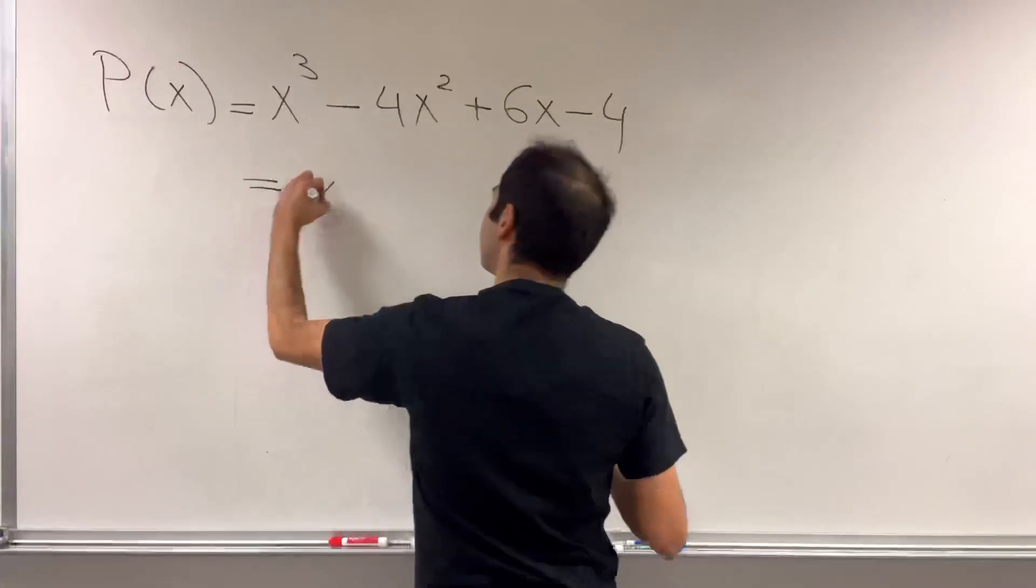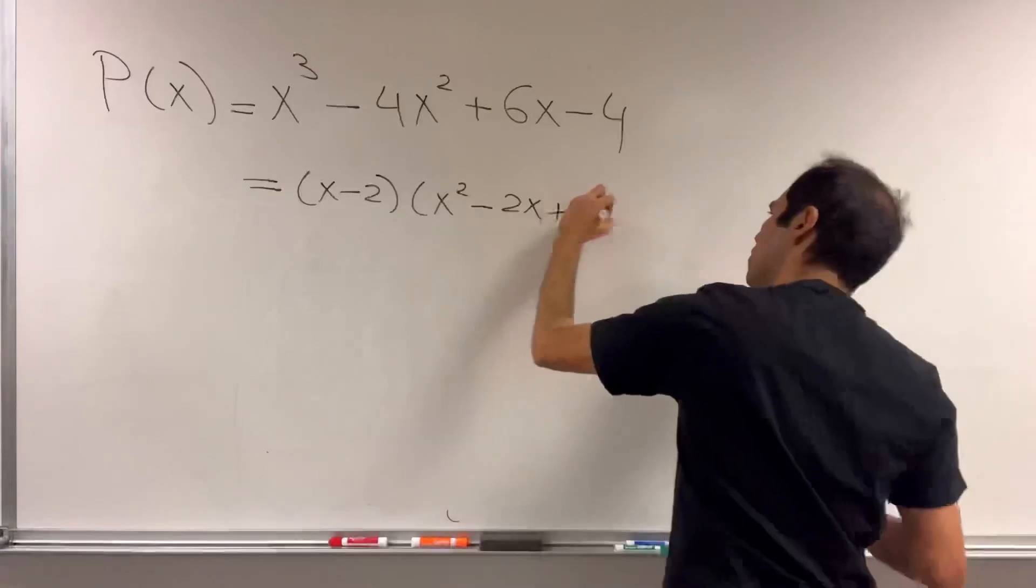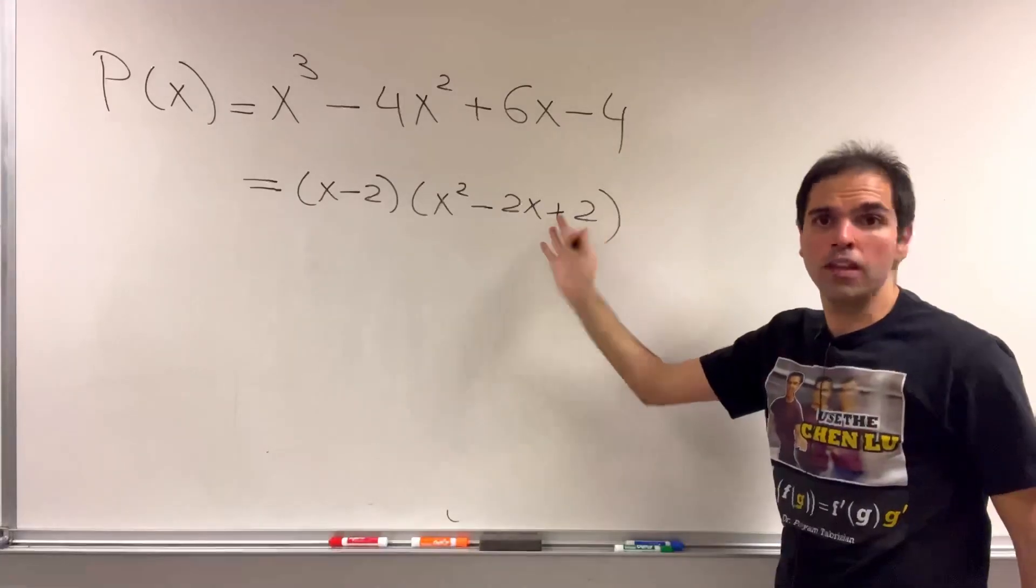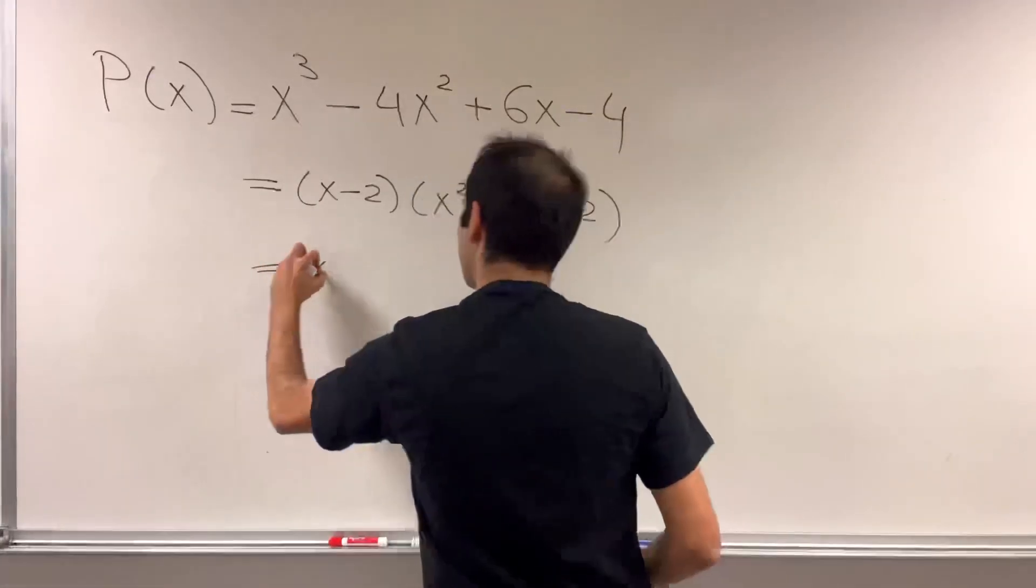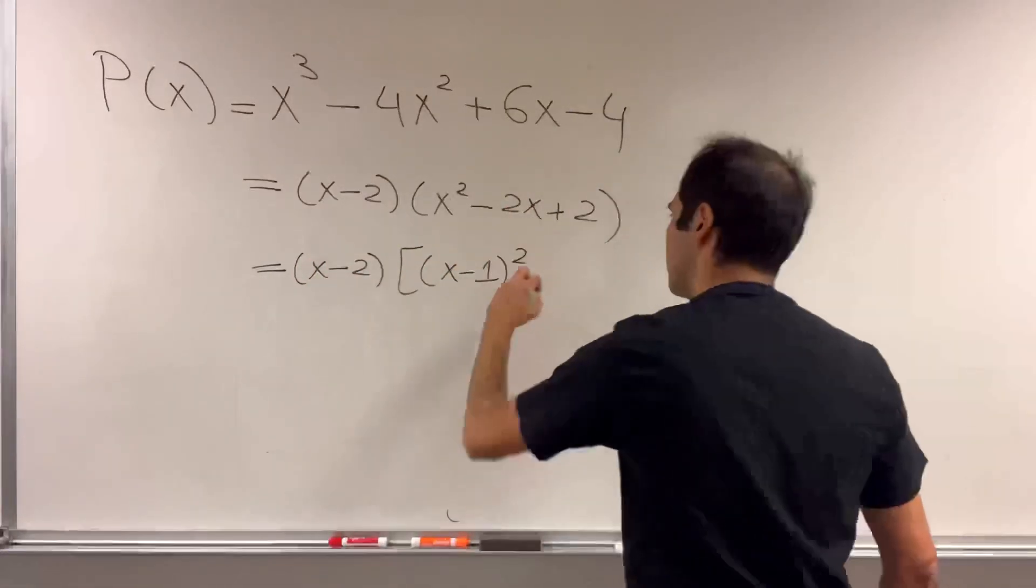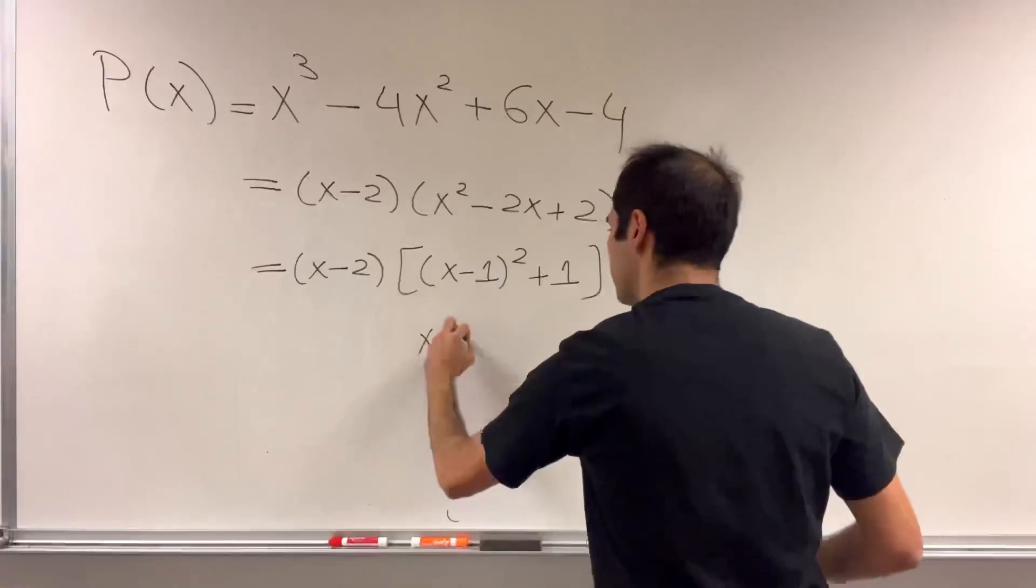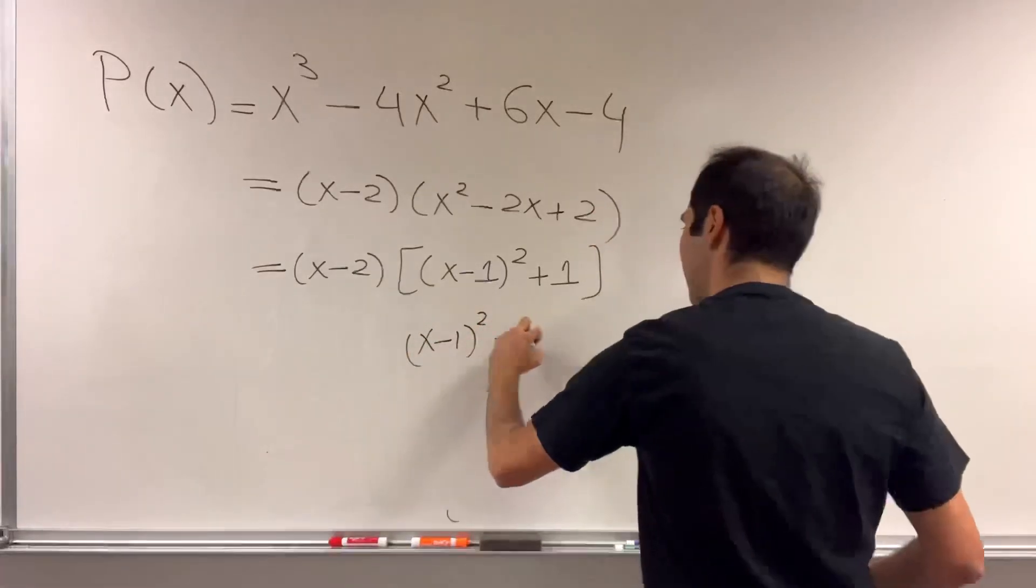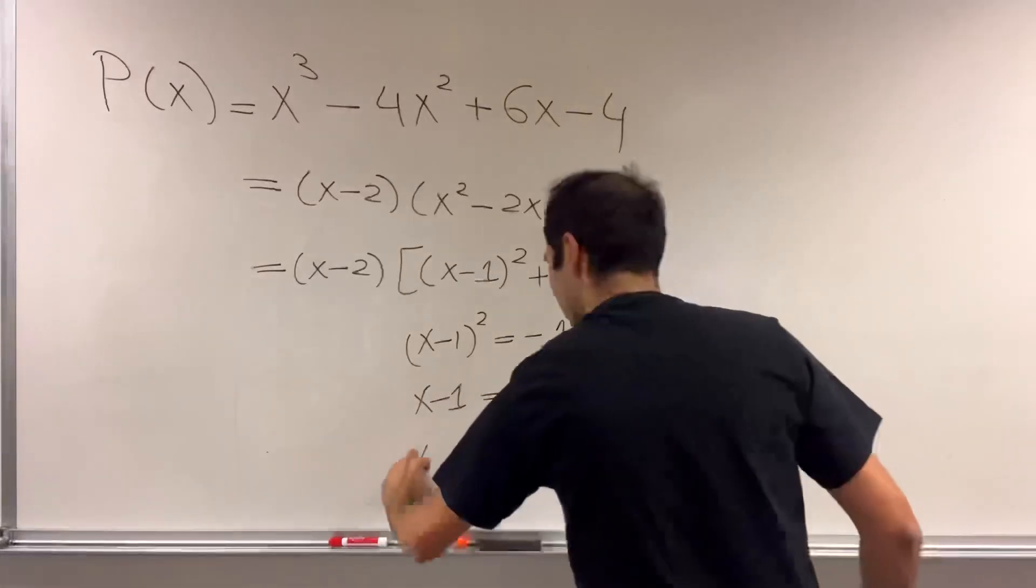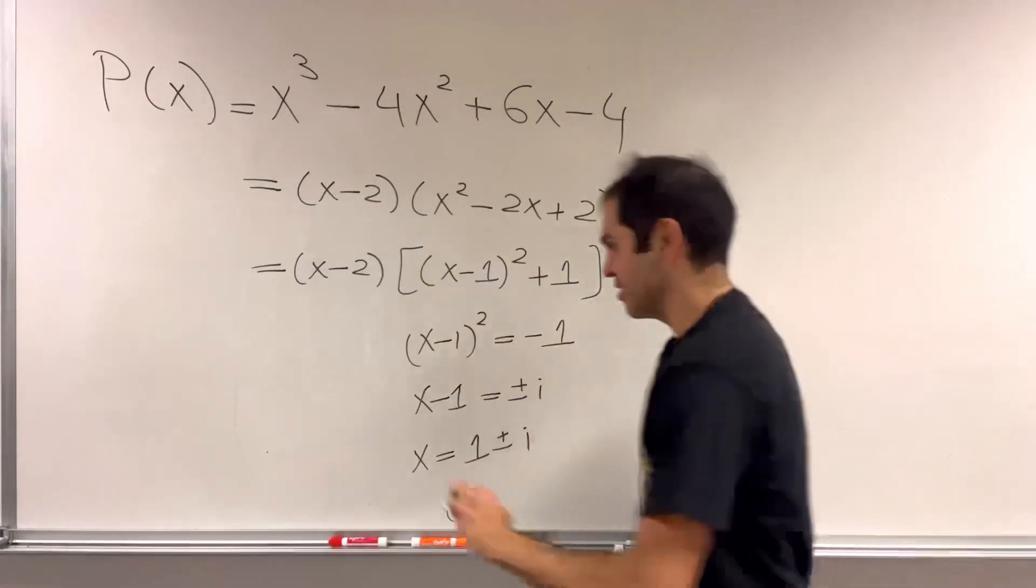Meaning that this x³ - 4x² + 6x - 4 is just this times this, which now allows us to find the roots. So now, as mentioned, we get that this is (x - 2) times (x² - 2x + 2). Now, to set it equal to 0, you could use the quadratic formula, but you don't have to. Because after completing the square, we simply get (x - 1)² + 1. And if you set that equal to 0, you get (x - 1)² = -1. So x - 1 is ± i. So x is 1 ± i. But also, of course, the other root, x = 2.